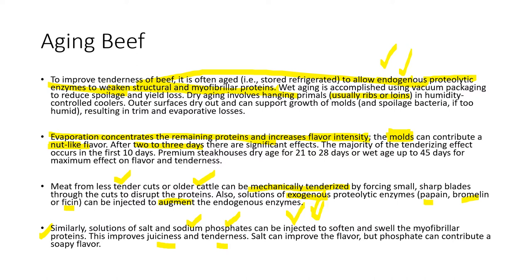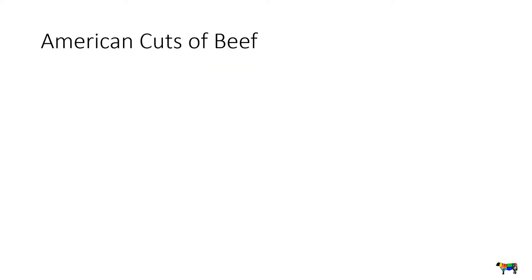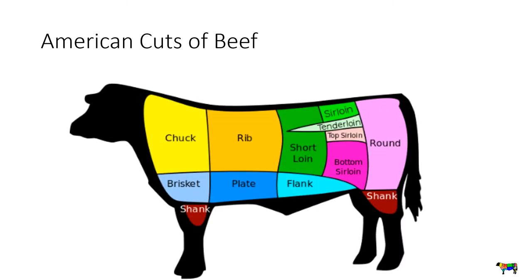Salt can improve flavor, while phosphate can contribute a soapy flavor. Phosphate also has a coloration effect, making the meat look pinker, so it is often used in preservation. American cuts of beef: we need to remember the labeling — chuck, brisket, rib, plate, shank, short loin, tenderloin, sirloin, top loin, bottom sirloin, round, flank. Beef is one of the most discussed topics in interviews.